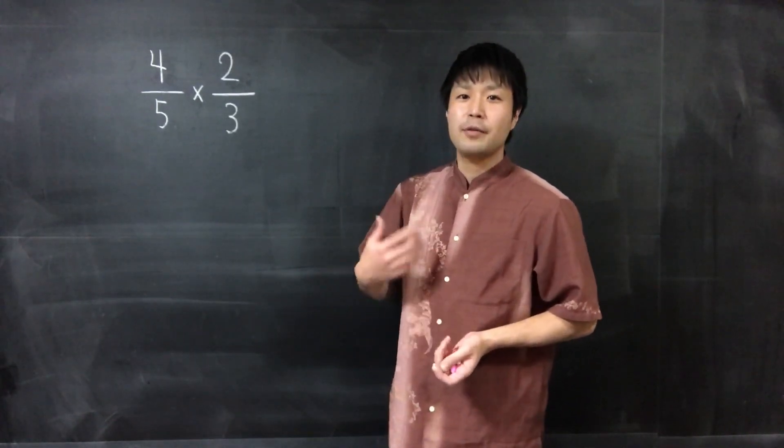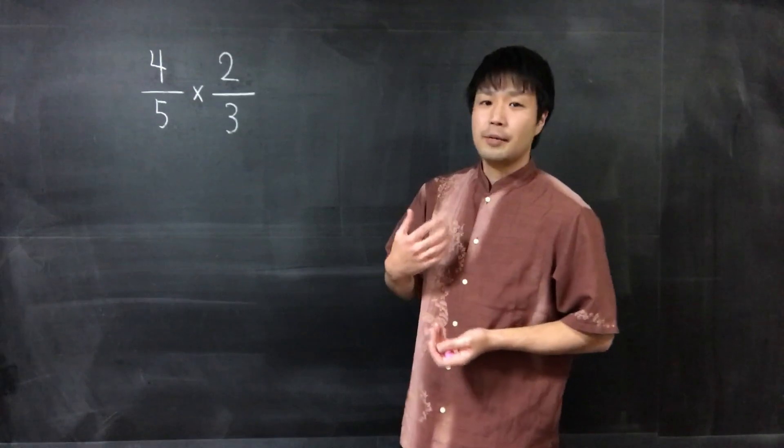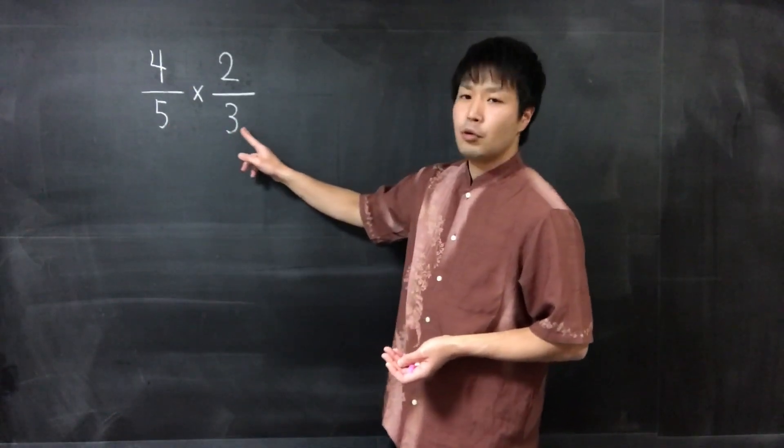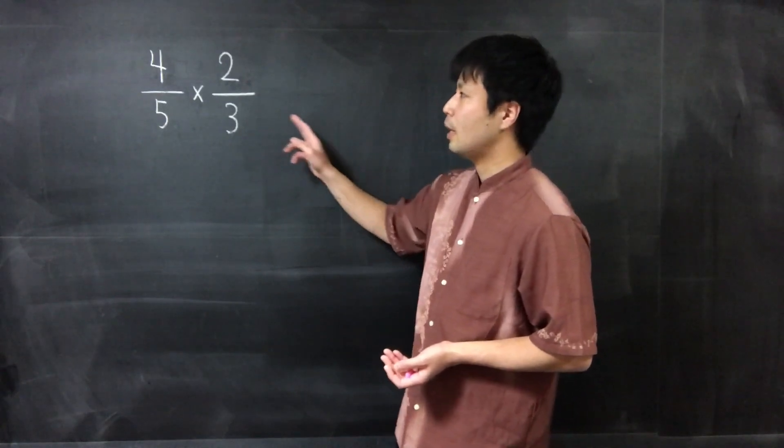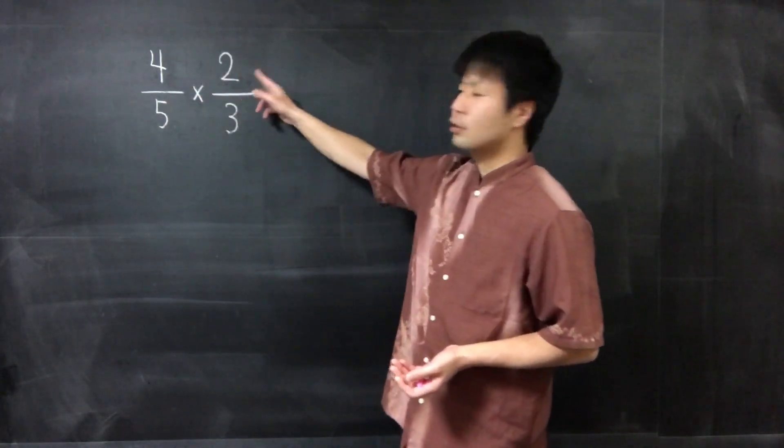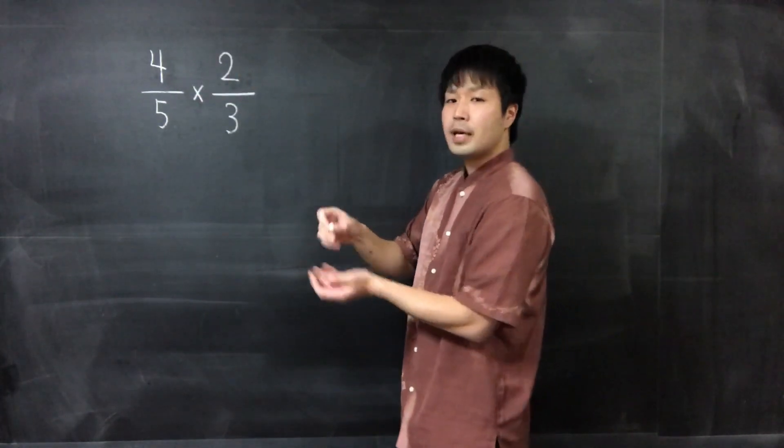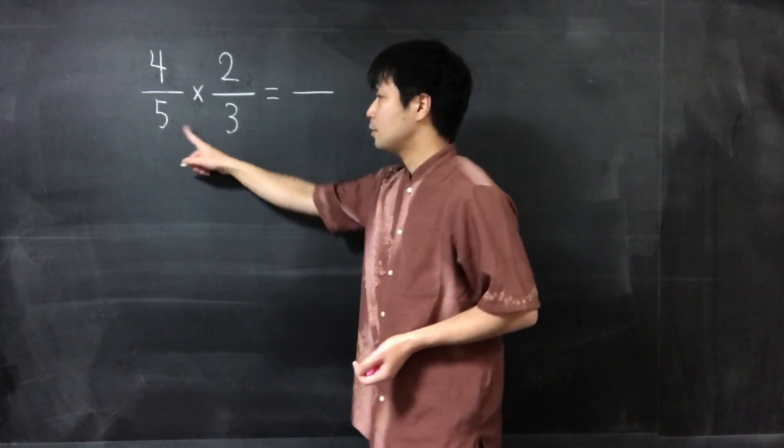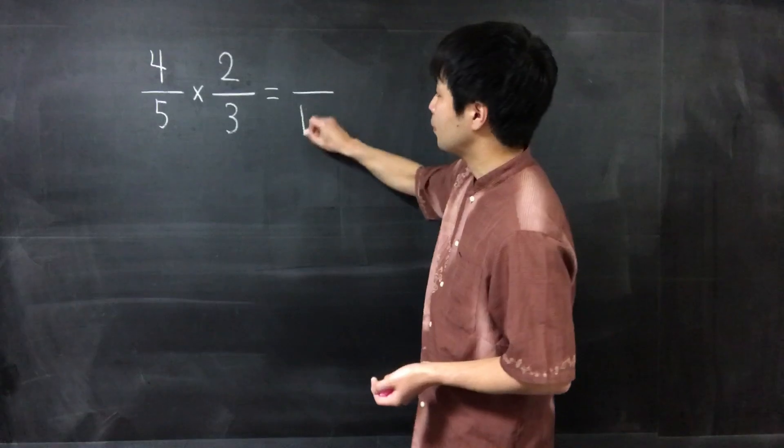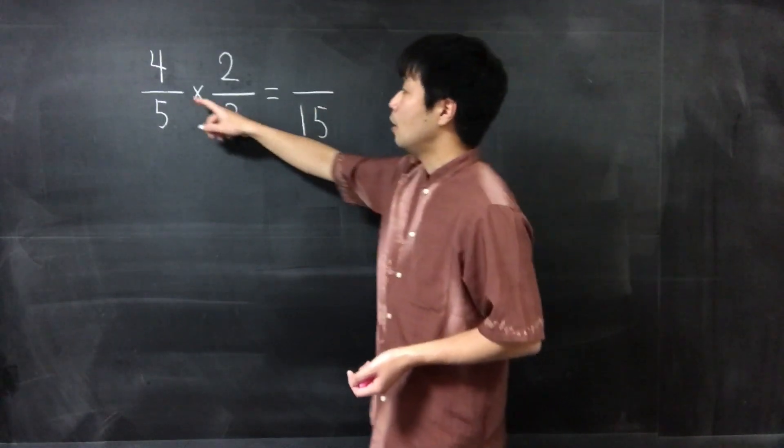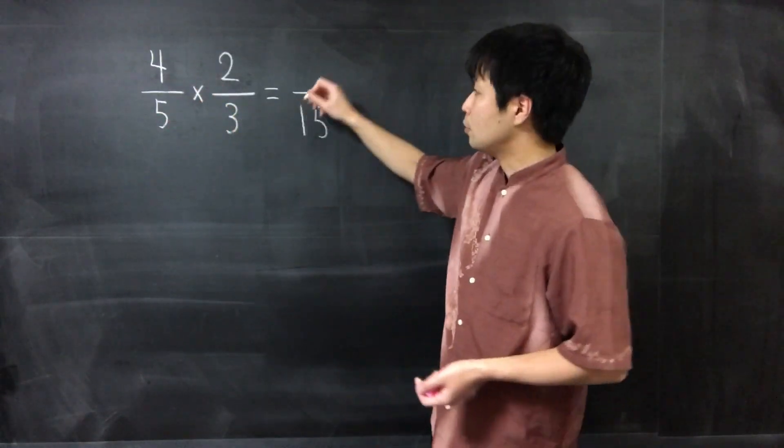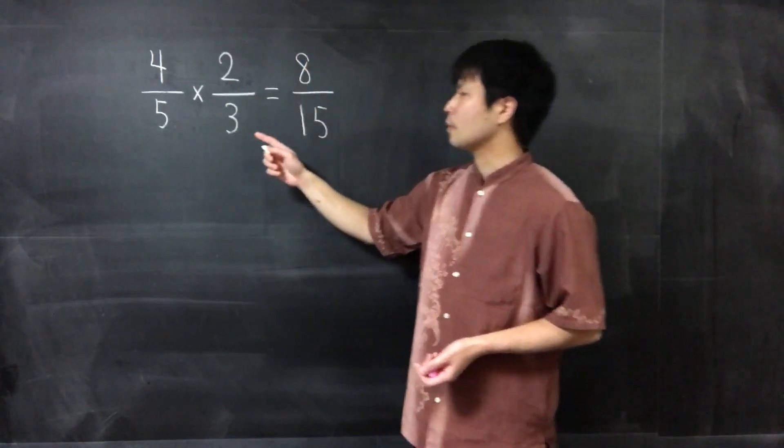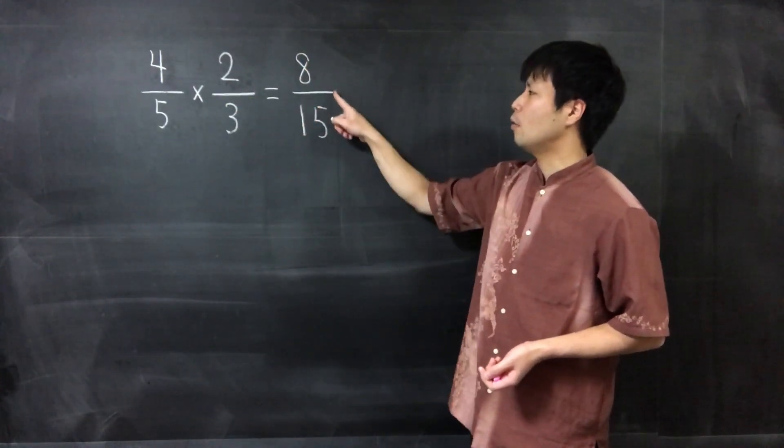In multiplying fractions, all we have to do is multiply each denominator together and each numerator together. So we can calculate like this: 5 times 3 equals 15 and 4 times 2 equals 8. So the answer of this expression should be 8 over 15.